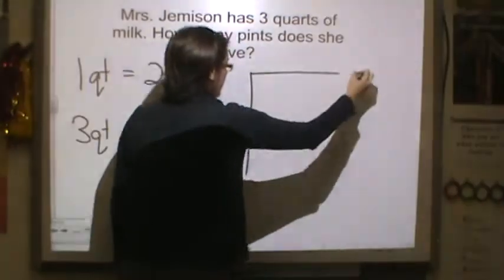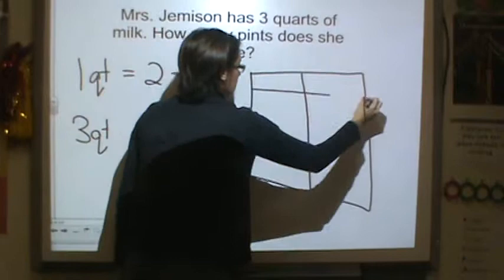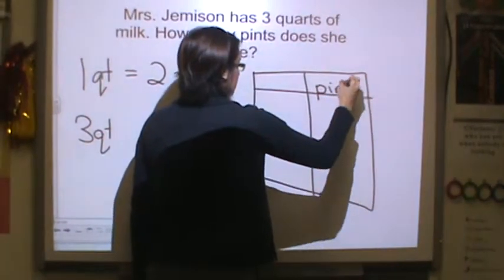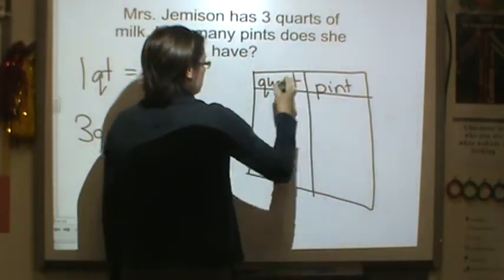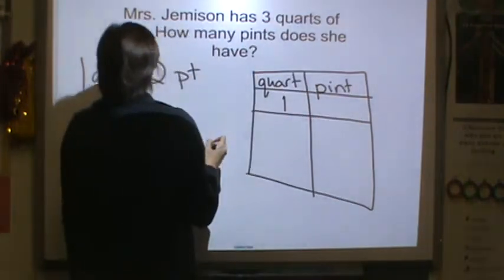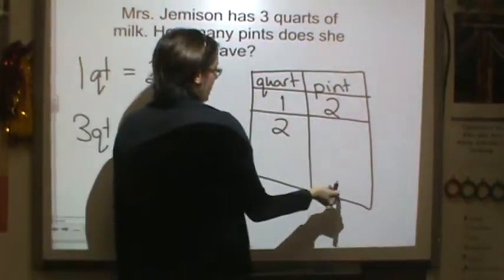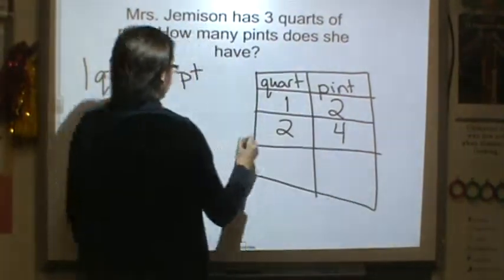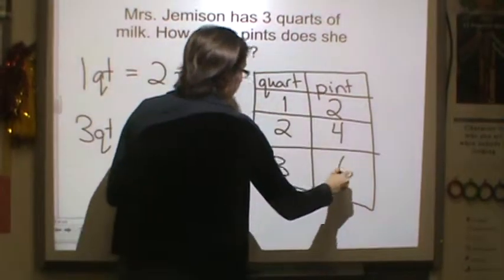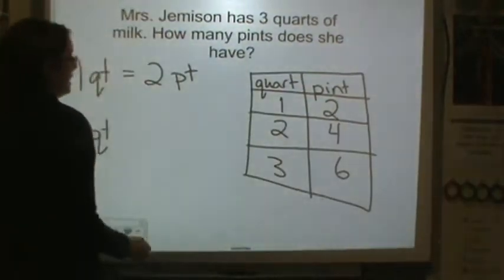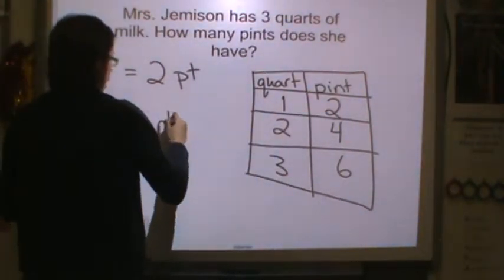If we were to do a table with pints and quarts: one quart is two pints; two quarts is four pints, because it's times two; three quarts is six pints. So the total is three quarts equals six pints.